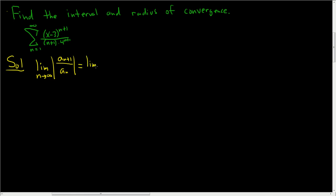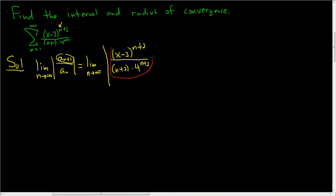This is the limit as n approaches infinity. Let's look at a sub n plus 1 — just replace all the n's with n plus 1's. So you have the absolute value of x minus 3 to the n plus 2, because n plus 1 plus 1 is n plus 2. On the bottom we have n plus 2 times 4 to the n plus 2. This is a sub n plus 1. We're supposed to divide by a sub n, so instead let's multiply by the reciprocal — times 4 to the n plus 1 times (n plus 1), all divided by x minus 3 to the n plus 1.